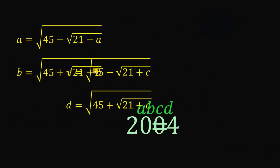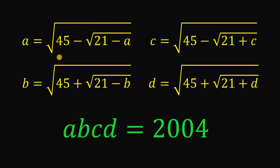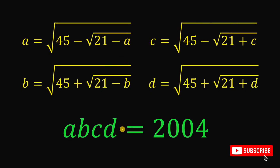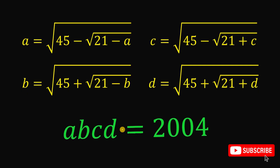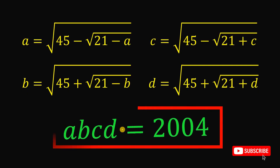Therefore, given these four equations, the numerical value of the product of a, b, c, and d is simply equal to 2004. And as always, we are done. We also have an extra challenge for you.